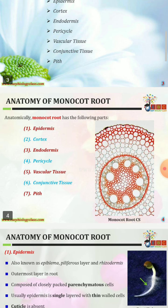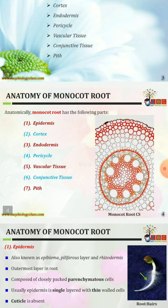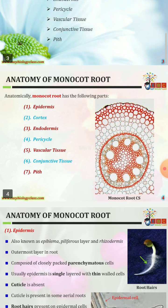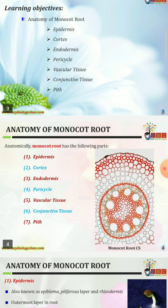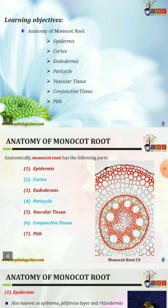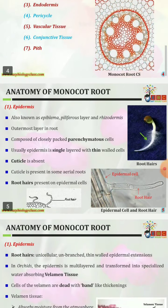Anatomically, monocot root has the following parts: epidermis, cortex, endodermis, pericycle, vascular tissues, conjunctive tissues, and pith. All the parts mentioned above are now elaborated with colored markers.